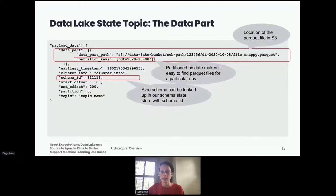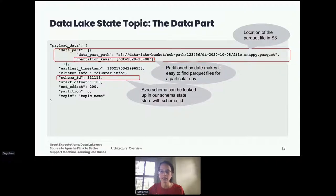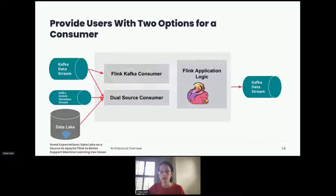Each metadata stream message has a payload containing critical elements helpful for finding data in S3. There's a list of S3 paths in case data is written in multiple files. The partition key gives an idea of the datetime of data in the file. Since these files originated from a Kafka topic, the payload includes information about the source Kafka topic such as offset start and end, and the cluster information of that topic and partition. The earliest timestamp field is especially useful — it is the earliest timestamp of the data within a data part, helping to more accurately sort data parts to understand ordering even across different partitions, allowing recreation of the original Kafka topic data from the data lake.